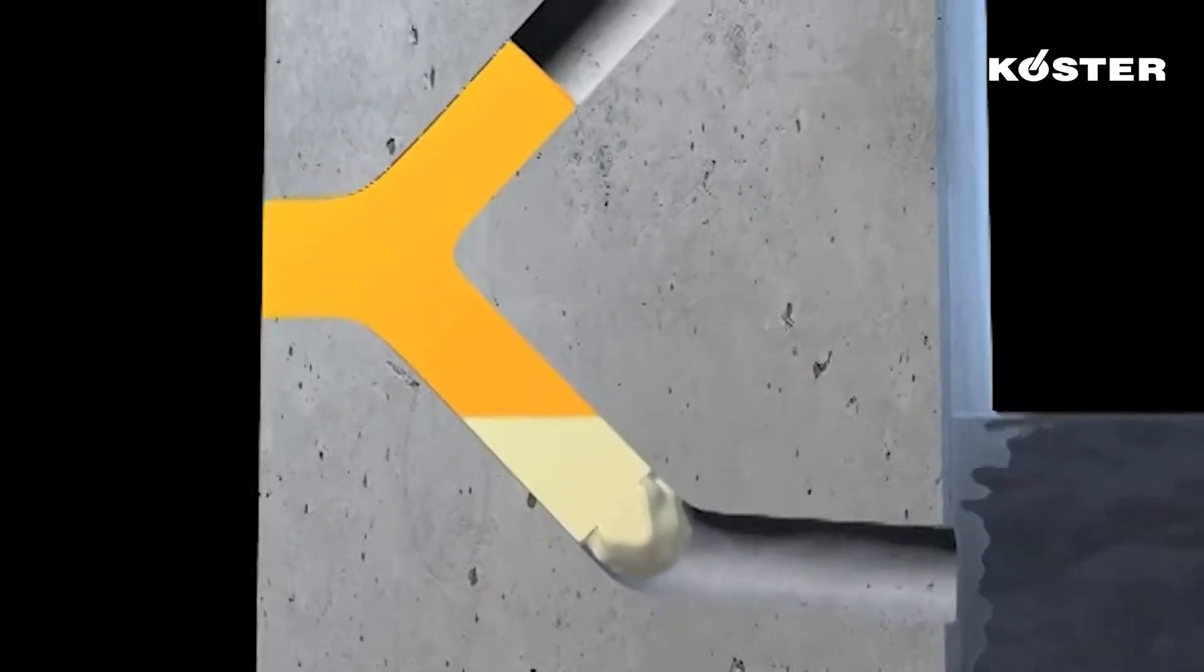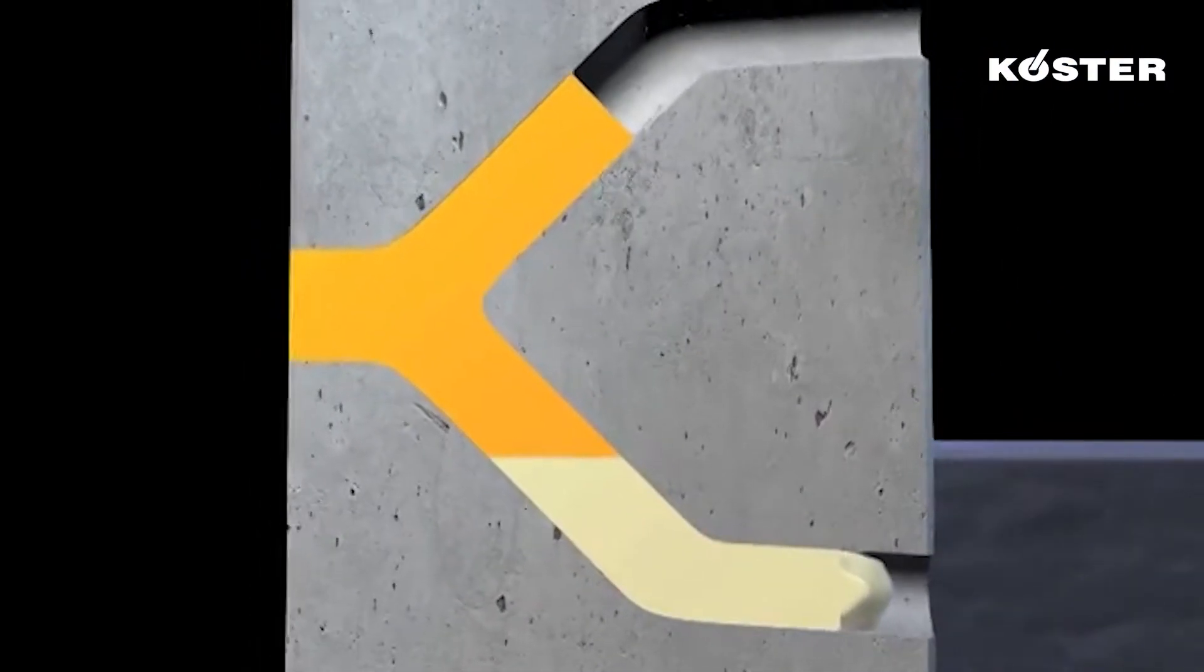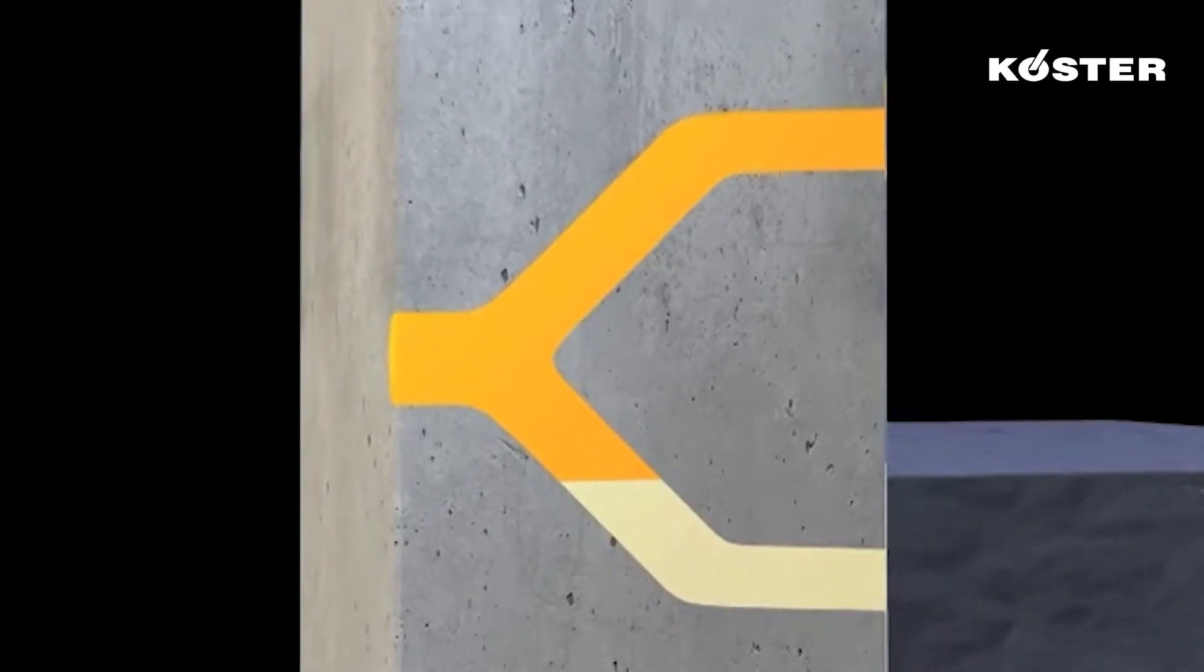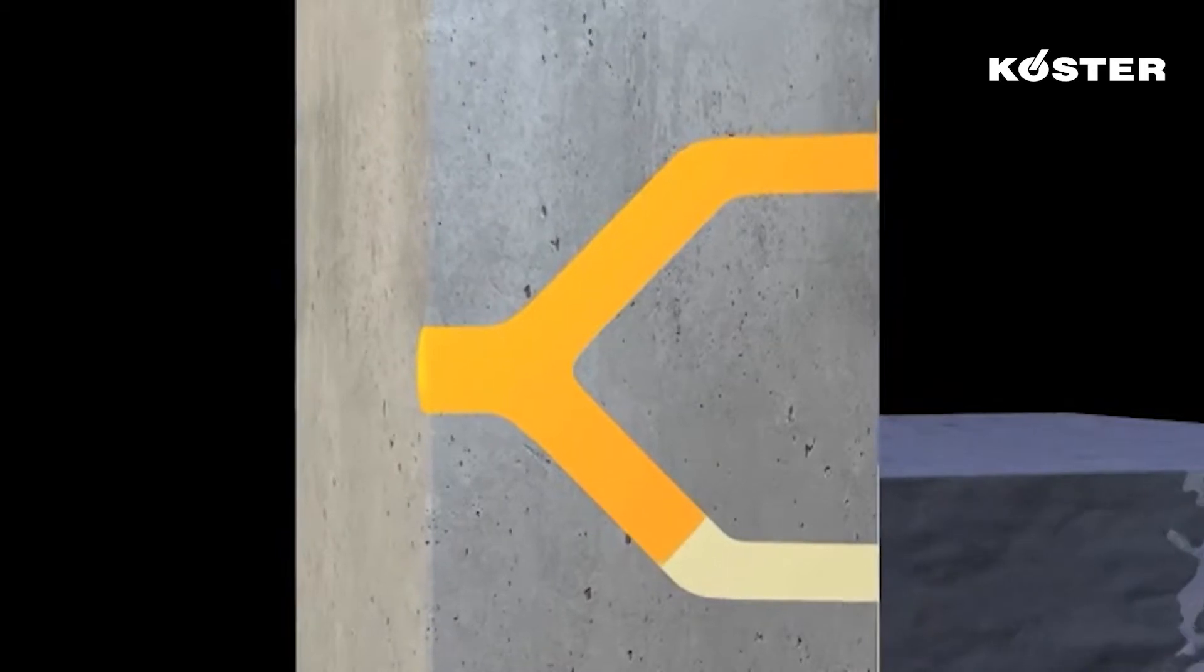When it comes into contact with water, it forms a highly elastic foam that stops the water and displaces it from the crack. When no water is present, it forms an elastic solid body resin.